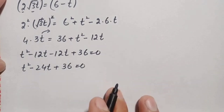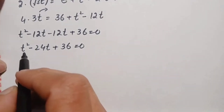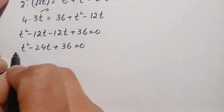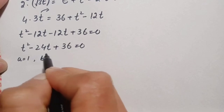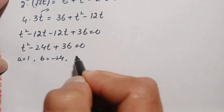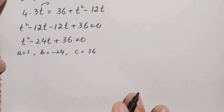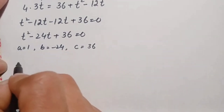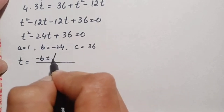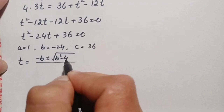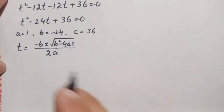To use the quadratic formula, we first identify the values of a, b, and c. The coefficient of t squared is a equals 1, the coefficient of t is b equals negative 24, and the constant is c equals 36. The quadratic formula is: t equals negative b plus or minus square root of b squared minus 4ac, divided by 2a.